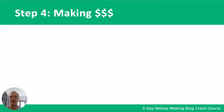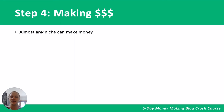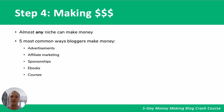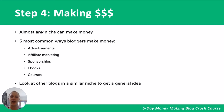Finally, the last step: making money. We're not going to go into too much detail since we'll cover this in later videos, but we want to outline how you might potentially monetize your site. Thanks to the many money-making programs for bloggers out there, almost any niche site can make money. There are five common ways bloggers make money: advertisements, affiliate marketing, sponsorships, ebooks, and courses. One thing we can do is look at other blogs in a similar niche to get a general idea. I'm going to go to google.com and type in 'pet blogs.'